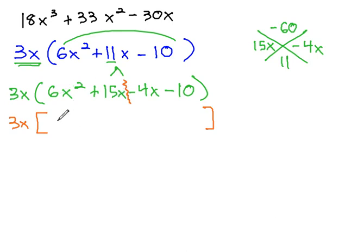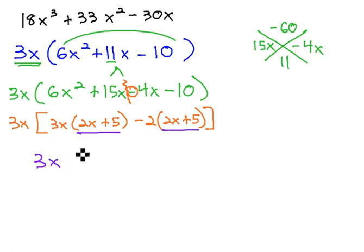6x² and 15x, the common factor there is 3x, leaves behind 2x plus 5. On the right side, negative 4x and negative 10, the common factor there is negative 2, keeping the sign from the middle. Leaves us with 2x plus 5, and we did get that matching factor that we want.